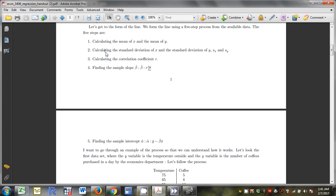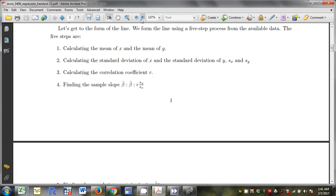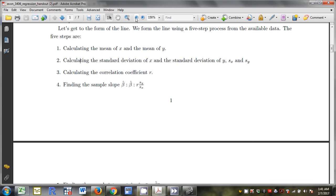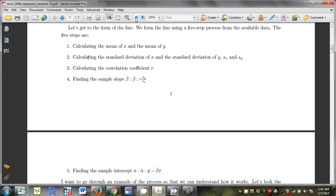Step one, find the mean of x and the mean of y. Step two, standard deviations of x and y. Step three, correlation coefficient. Step four, sample slope. You see this beta hat right here. Correlation coefficient, ratio of standard deviations. Last step, sample intercept alpha hat.